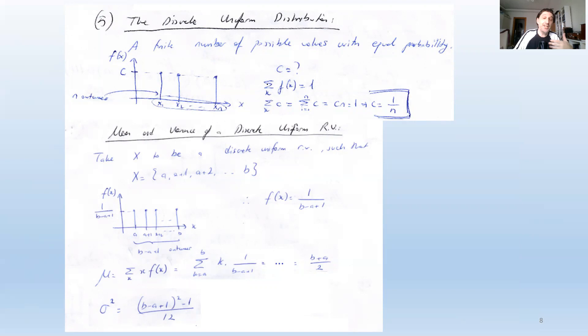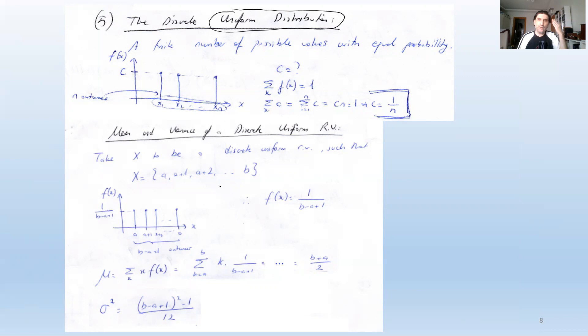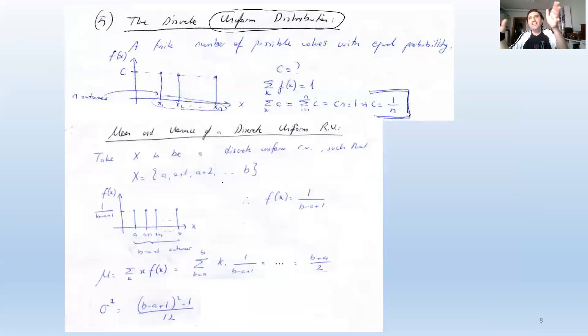These distributions are frequently used because they model natural events in many occasions. Think of it like learning a language — the first vocabulary word is the uniform distribution. For a specific distribution, we learn what values the random variable may take, the corresponding probability mass function values, and the expected value and variance.